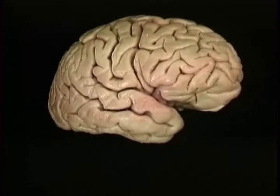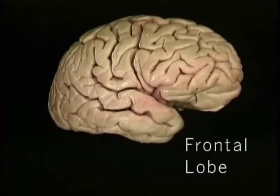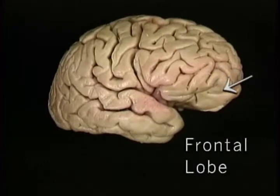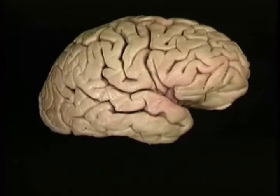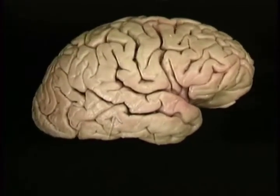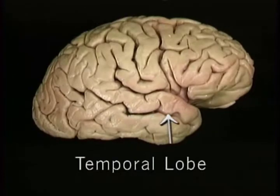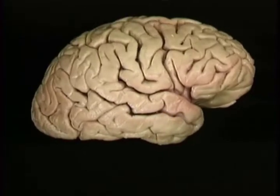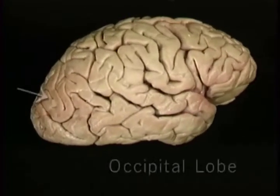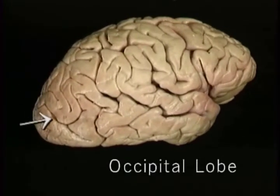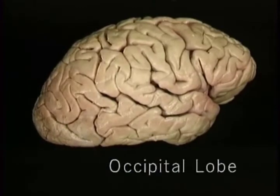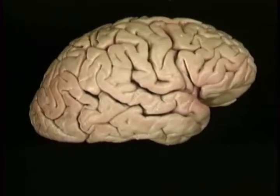In front, this part — the frontal lobe — occupies the anterior cranial fossa. This part below, the temporal lobe, occupies the middle cranial fossa. This part behind, the occipital lobe, lies above the tentorium.